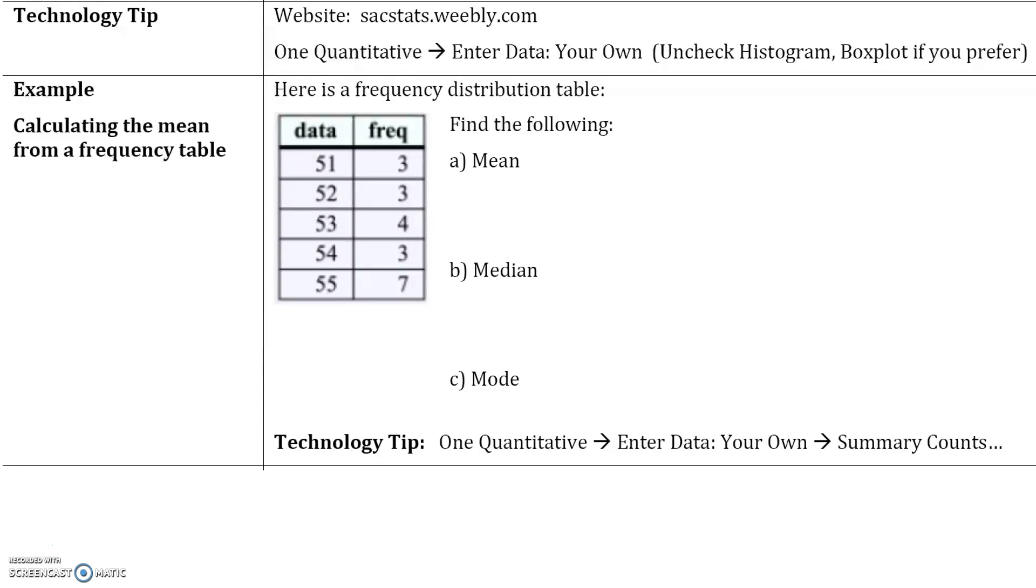Here's a technology tip. You can go to this website, it's a free website with free calculators: sacstats.weebly.com. You would click on one quantitative and enter your own data. If you want, you can uncheck histogram and plot to get what the mean and median are.